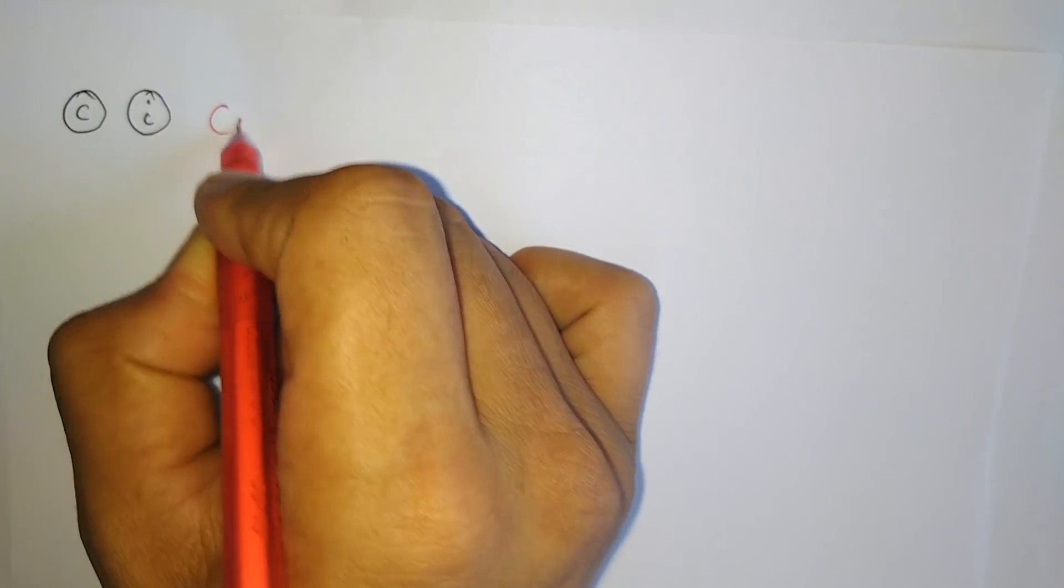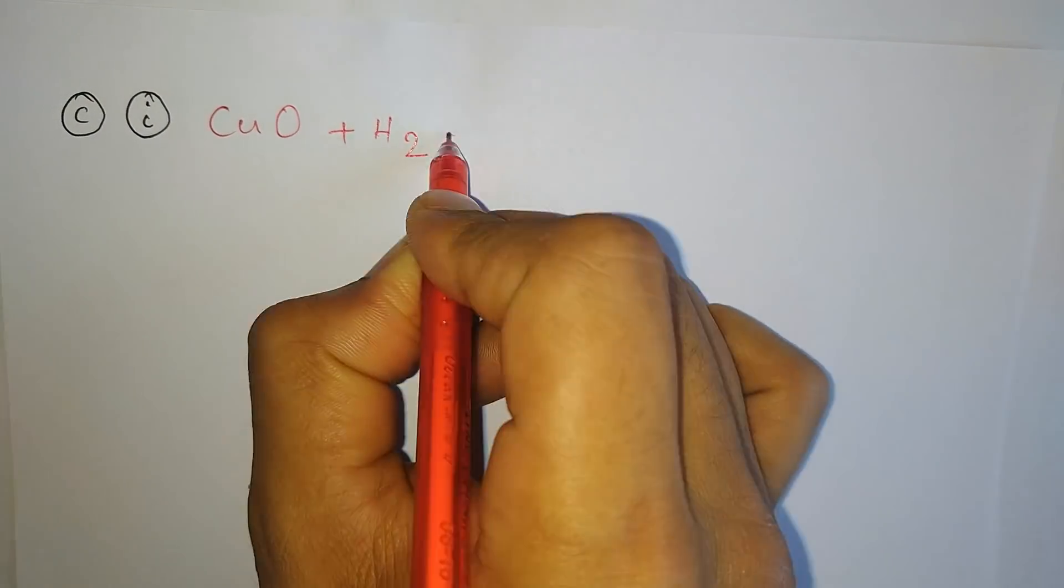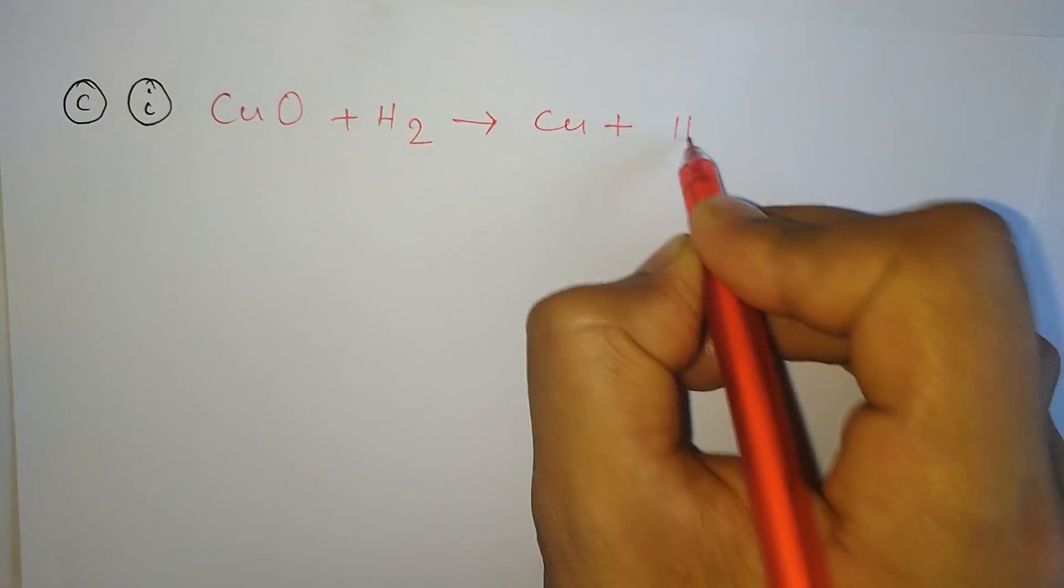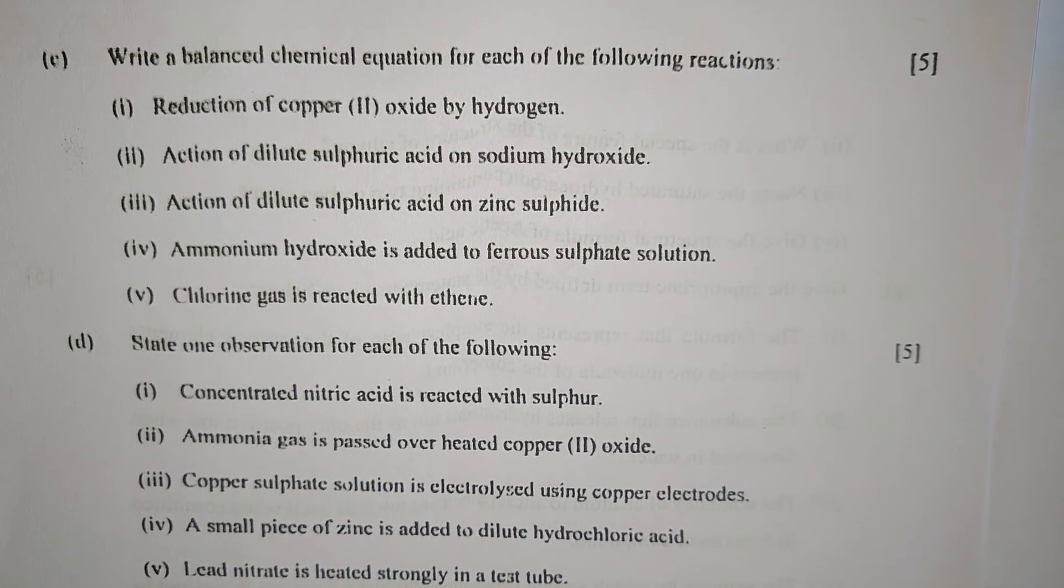Part C: Write a balanced chemical equation for each of the following reactions. Number one: Reduction of copper two oxide by hydrogen. The reaction will be copper two oxide reacts with hydrogen to form copper and water.